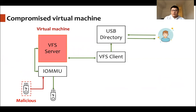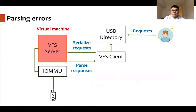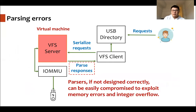There are also cases where a malicious and an honest flash drive are connected to our system at the same time. If the malicious flash drive has some way to compromise the virtual machine, that would bring several security issues. Confidential data stored in the honest flash drive might be stolen by the malicious one. Files transferred between the honest drive and the host could be tampered. And the malicious flash drive could issue malformed file system responses to the client to try to crash the host. The parser becomes a very important part of our system, and if parsers are not designed carefully, they could be exploited to trigger memory errors and integer overflows.